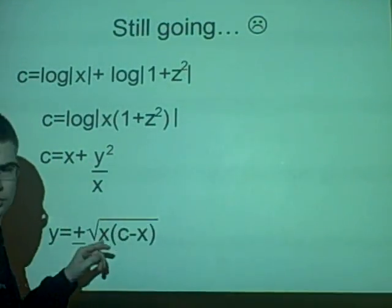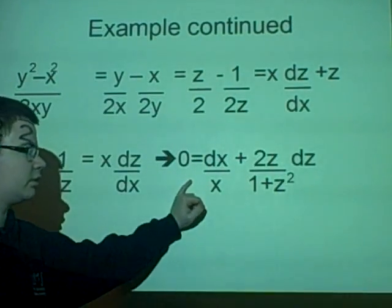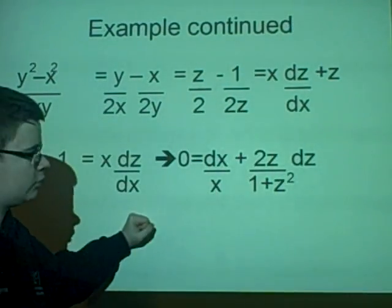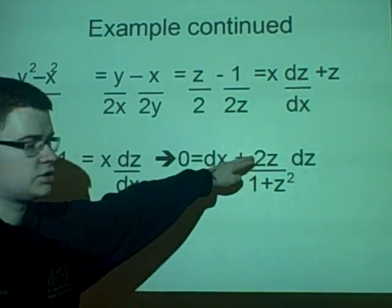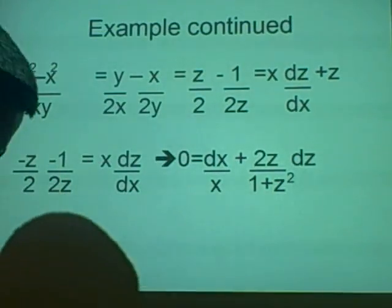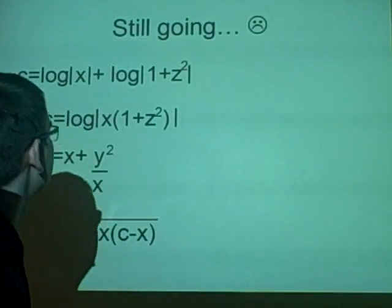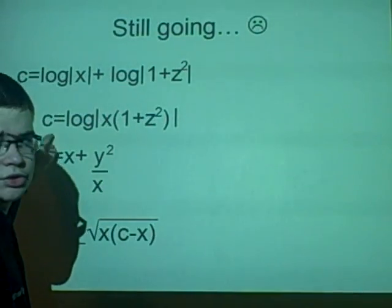Right, and now we were left with this, and now we want to integrate it with our separation of variables, so it gives us log x plus, because that's the differentiation of this, log 1 plus z squared. And this has got to equal some constant because we've got to have our integration constant.